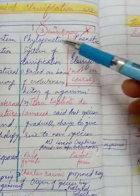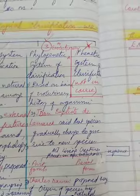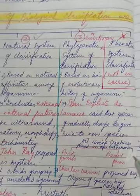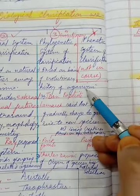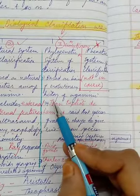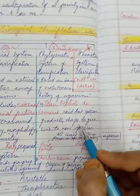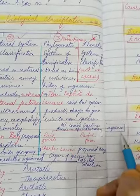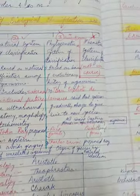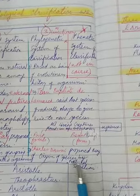The third is the evolutionary or phylogenetic system, based on evolutionary history of organisms. Jean-Baptiste de Lamarck proposed that species gradually change and give rise to new species, dividing all living creatures into an evolutionary sequence of past fossil forms and present living forms. Charles Darwin also contributed by proposing the theory of origin of species by natural selection.